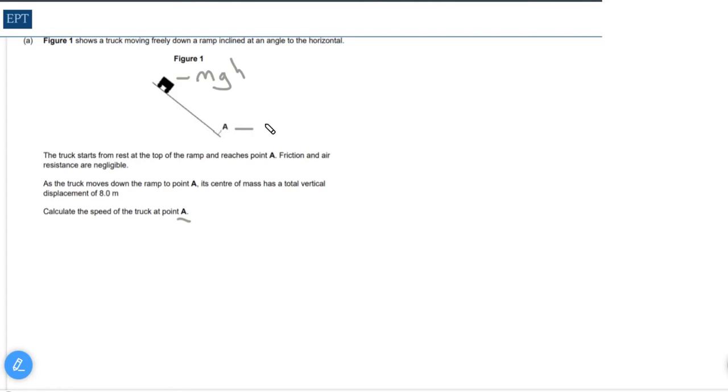That means that mgh is equal to half mv squared, and a great advantage here is you can see the m's are cancelling out straight away. So that leaves us with the square root of 2gh equals to v.